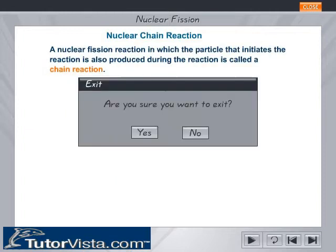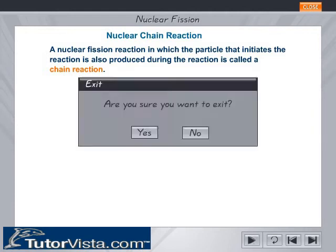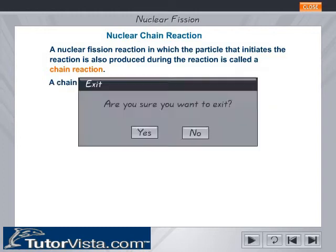A nuclear fission reaction in which the particle that initiates the reaction is also produced during the reaction is called a chain reaction. A chain reaction may be controlled or uncontrolled.